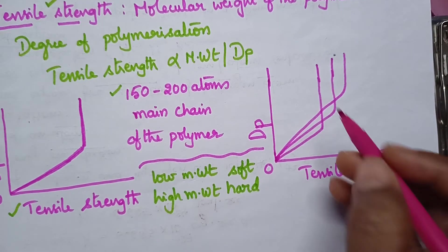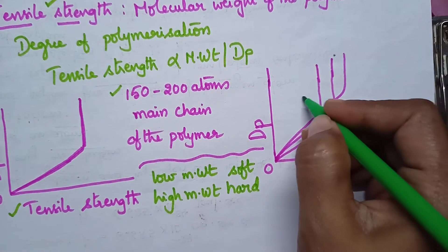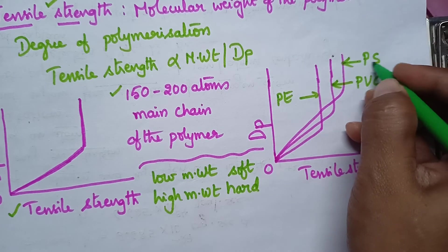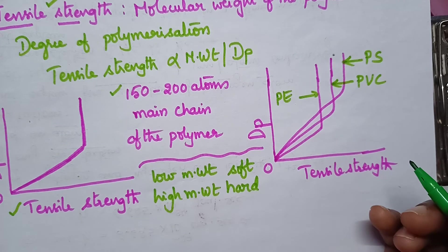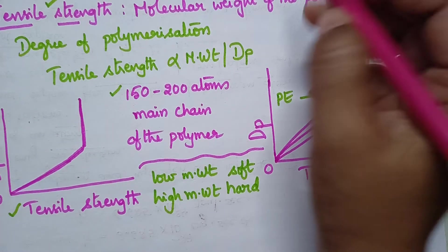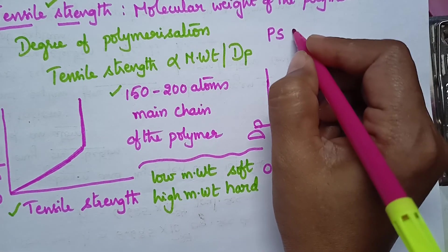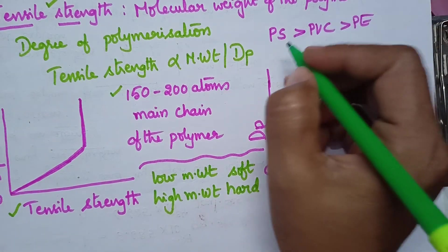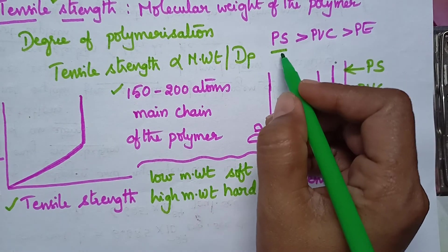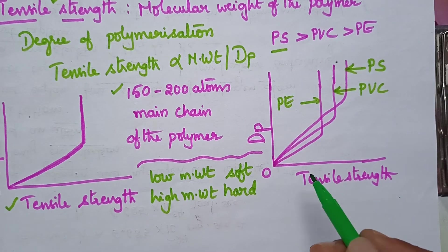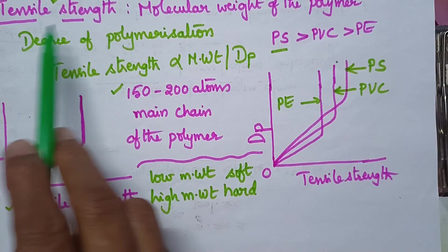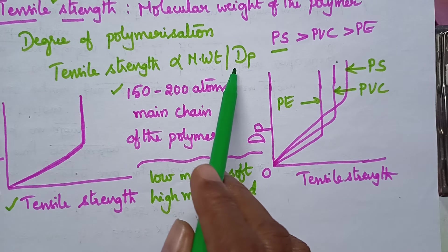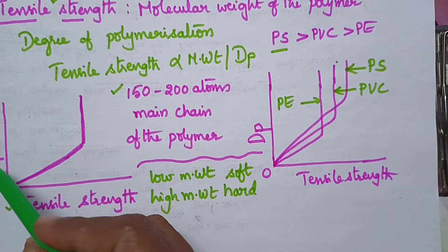These are the curves of polythene, polyvinyl chloride, and polystyrene. From these curves it is clear that the tensile strength of polystyrene is greater than that of polyvinyl chloride, which is greater than that of polythene. As the molecular weight of the polymer is high, they exhibit high tensile strength. Tensile strength is thus directly proportional to the degree of polymerization.